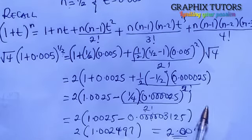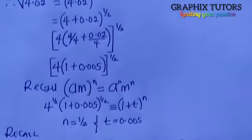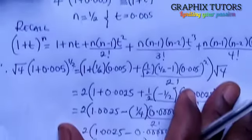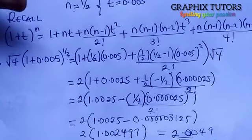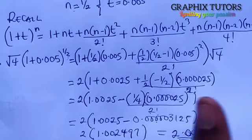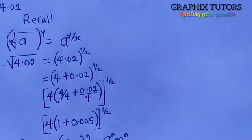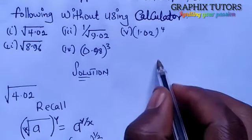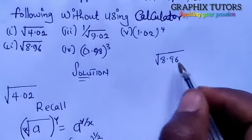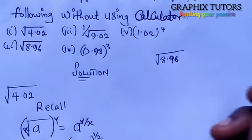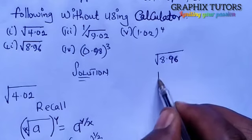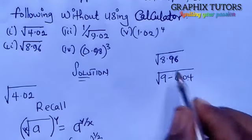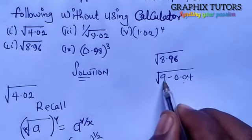If you press the square root of 4.02 into a calculator it will give you 2.0049 — confirming our result. Now for the next question: square root of 8.96. Ask yourself what value 8.96 is close to — it's close to 9. So 9 − 8.96 = 0.04, meaning we write it as (9 − 0.04)^(1/2).